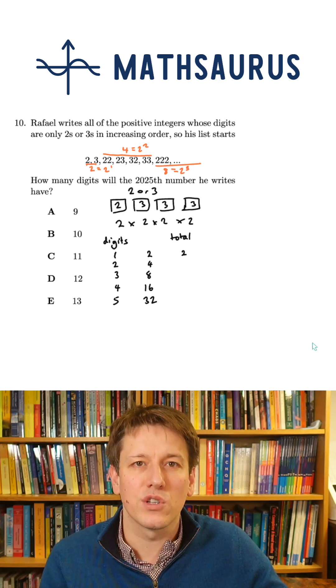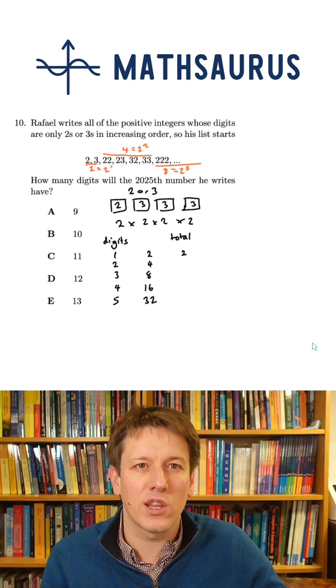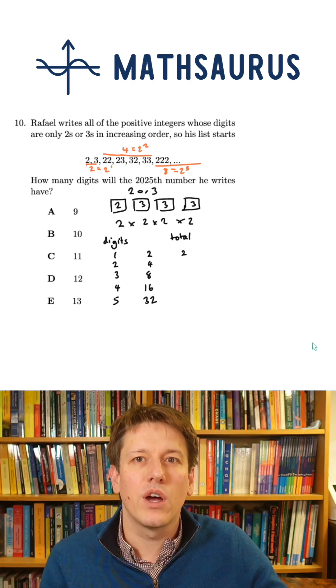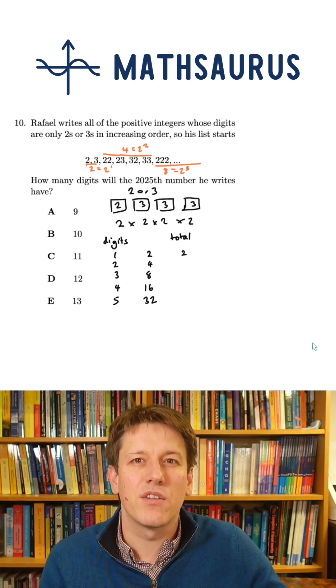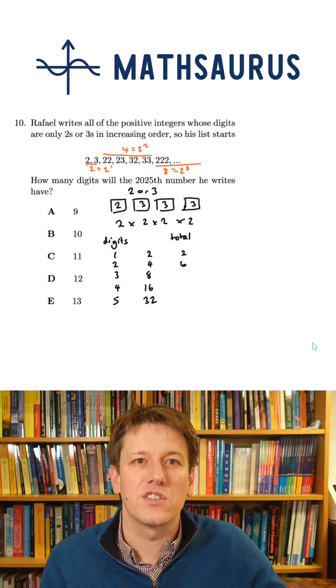And if I then look at the total of these numbers, at the cumulative total, then I will know how many numbers there are with fewer than four digits, fewer than five digits, and so on.